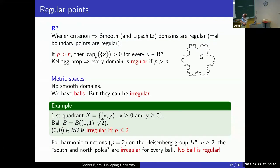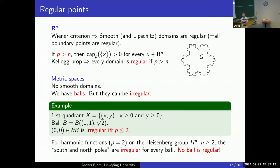Now, regular points. In ℝⁿ, the Wiener criterion implies that smooth and even Lipschitz domains are regular. A domain is regular if all boundary points are regular. Even a domain with a snowflake boundary has all regular boundary points. If p > n, the capacity of every point is positive, and by the Kellogg property there cannot be any irregular boundary points — so all domains are regular in that case.